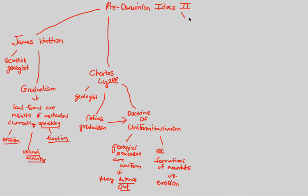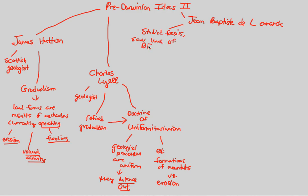Finally, we end this flowchart by looking at a crucial individual still very important today: Jean-Baptiste de Lamarck, a Frenchman. He was a crucial individual in pre-Darwinian ideas because he studied fossils, just like his predecessors, but he saw what we call lines of descent — specifically from older to younger species. Go back to our definition of evolution: Descent with Modification. We finally see the word 'descent.'